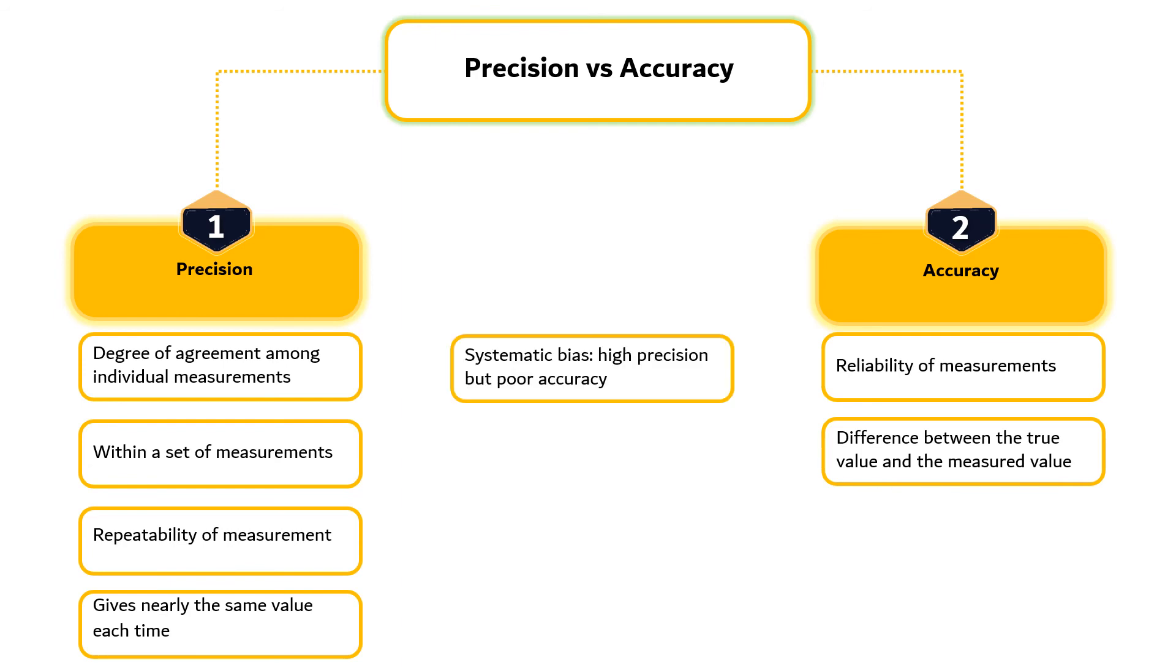If a certain data has high precision but poor accuracy, one may suspect a systematic bias.